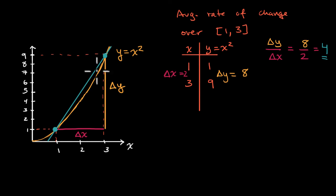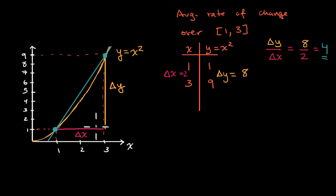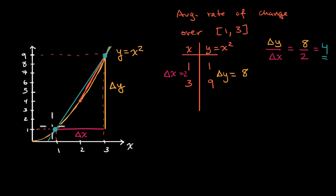You might wonder: why are you learning this in a calculus class? Couldn't you have learned this in algebra? The answer is yes. But what's going to be interesting — and it's really one of the foundational ideas of calculus — is what happens as these points get closer and closer together. We found the average rate of change between one and three, or the slope of the secant line from (1, 1) to (3, 9). But what if you found the slope of the secant line between (2, 4) and (3, 9)? Or even closer — the slope between (2.5, 6.25) and (3, 9)?